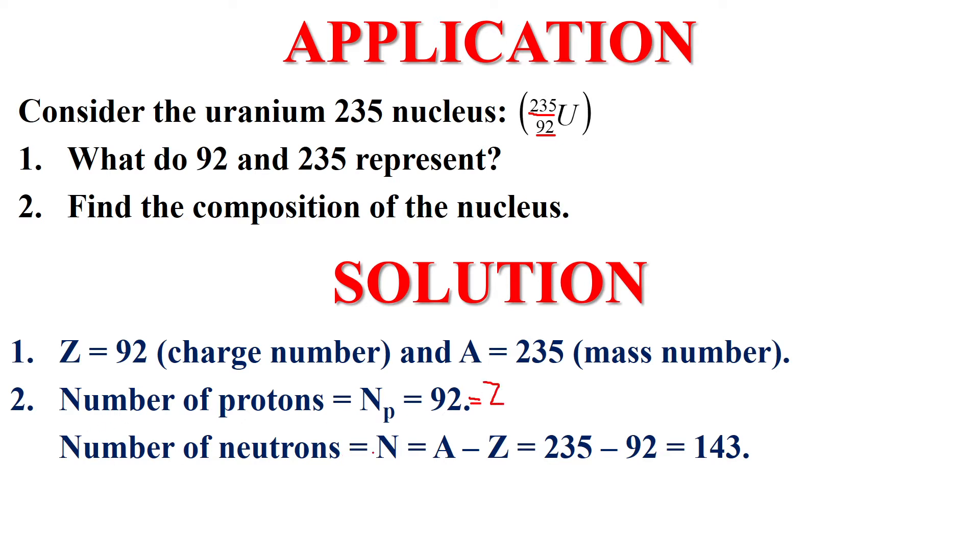The number of neutrons is N. A minus Z means 235 minus 92 equals 143.